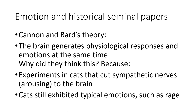In Cannon and Bard's theory from that article, they proposed that the brain generates physiological responses and emotions at the same time. They did a series of experiments on cats. In one experiment, they cut the sympathetic nerves that would provide arousal stimuli to the brain, and found that the cats still had emotions. Even when you cut the body's physiological response from the brain, cats still displayed emotions such as rage.